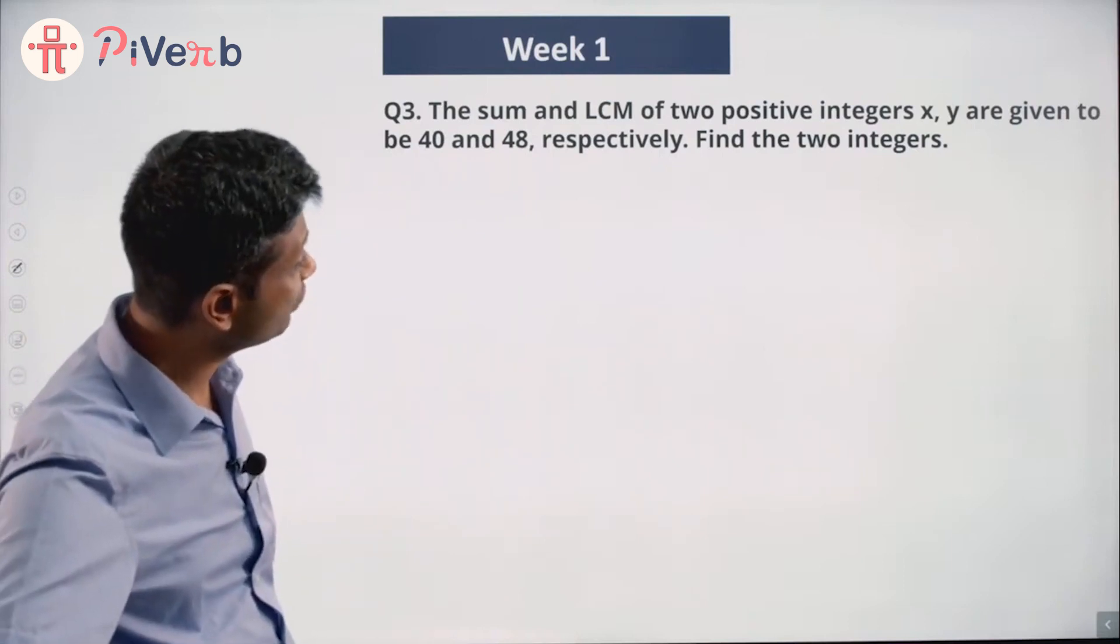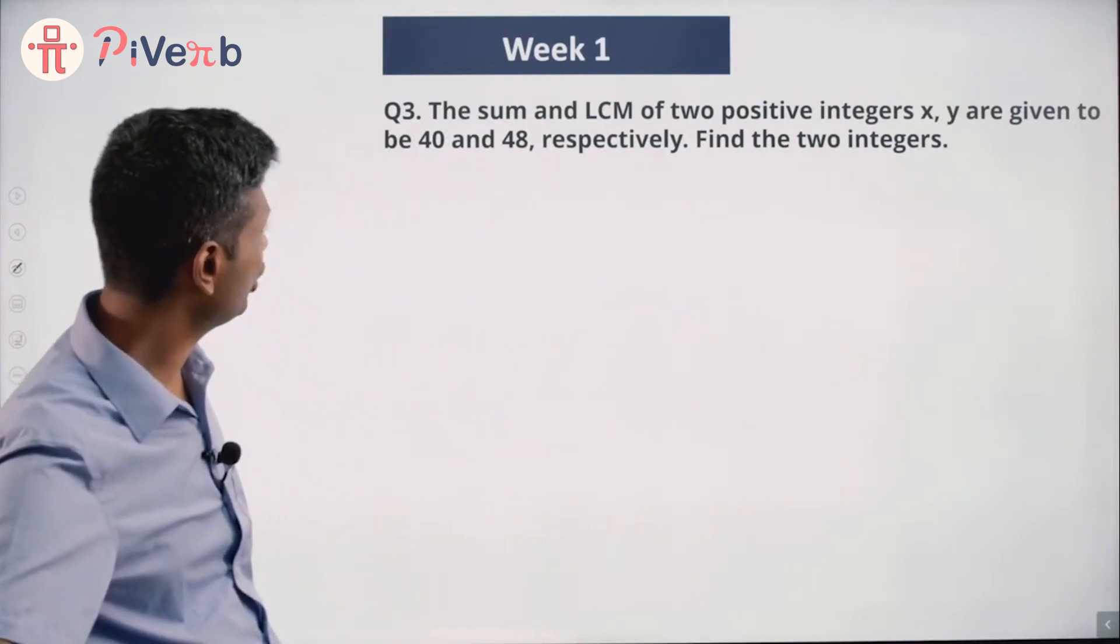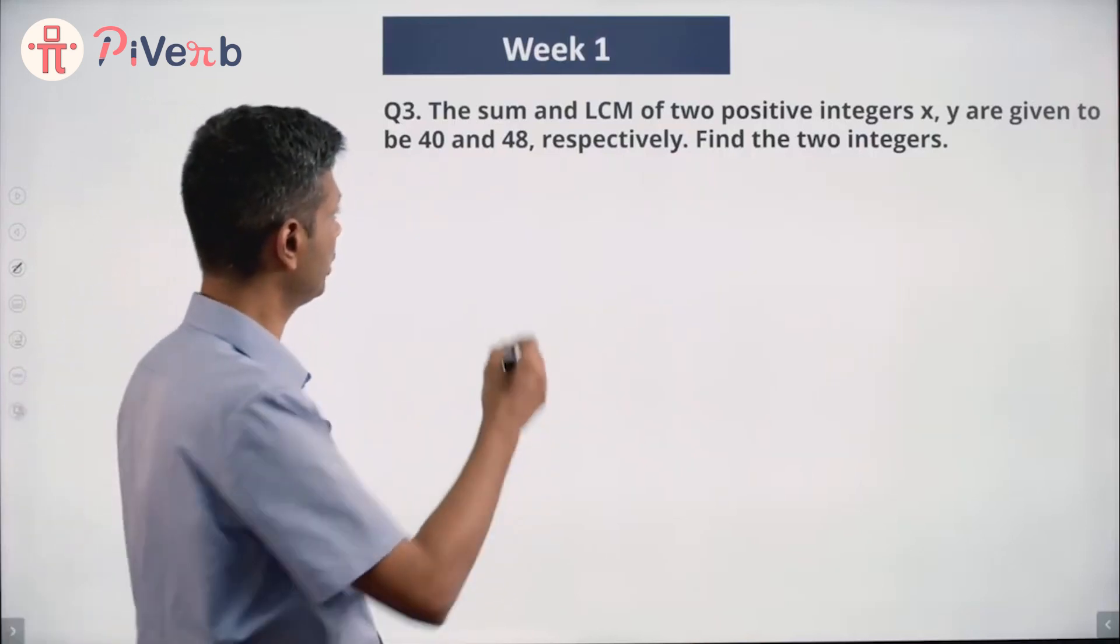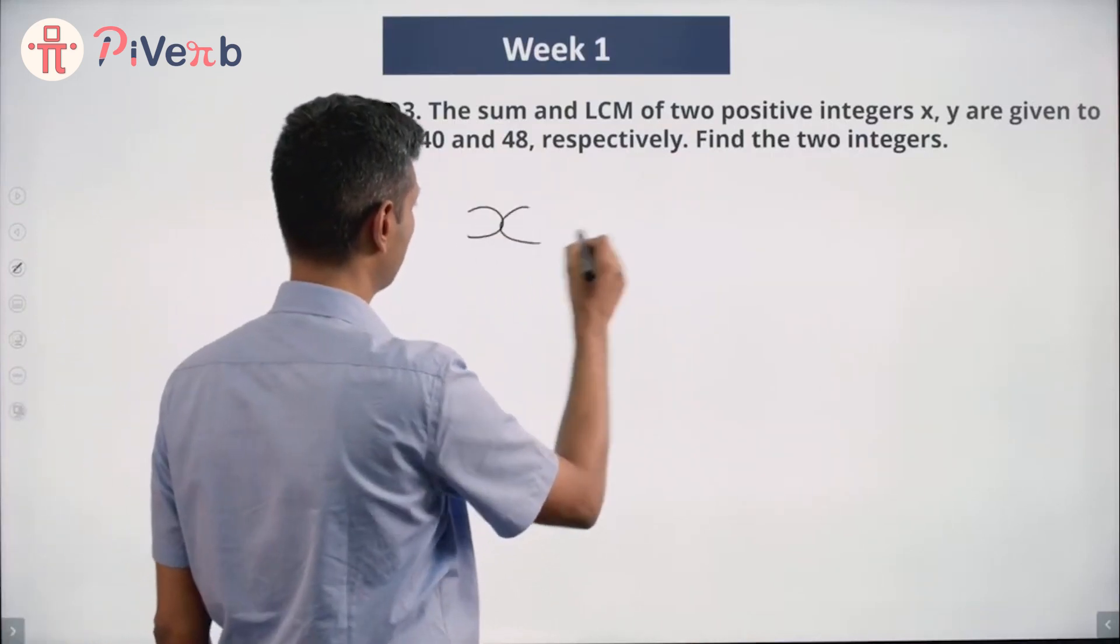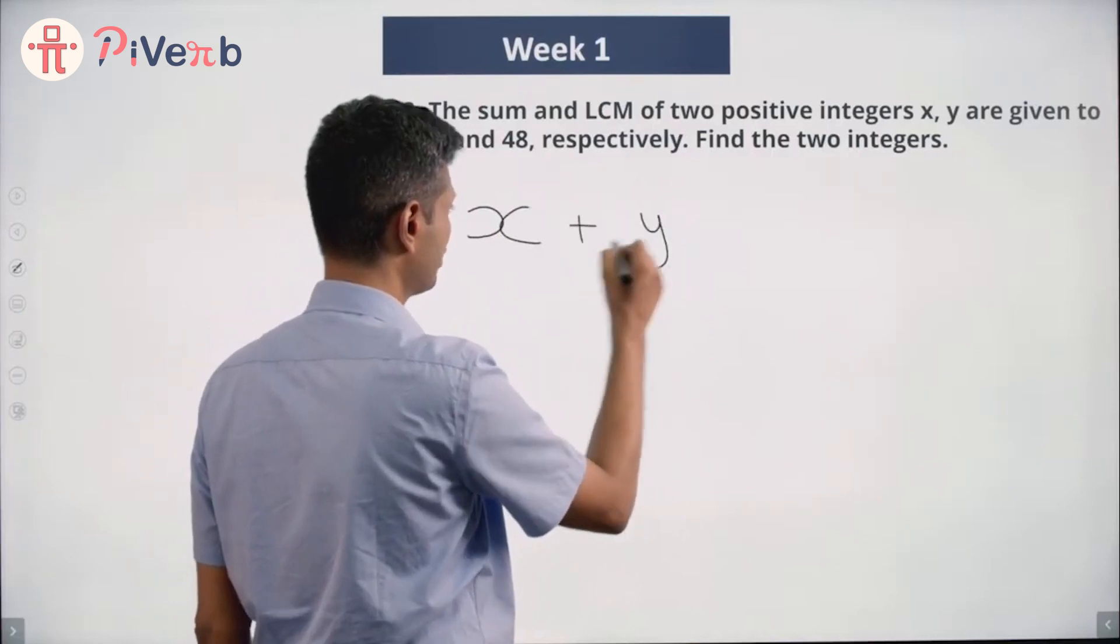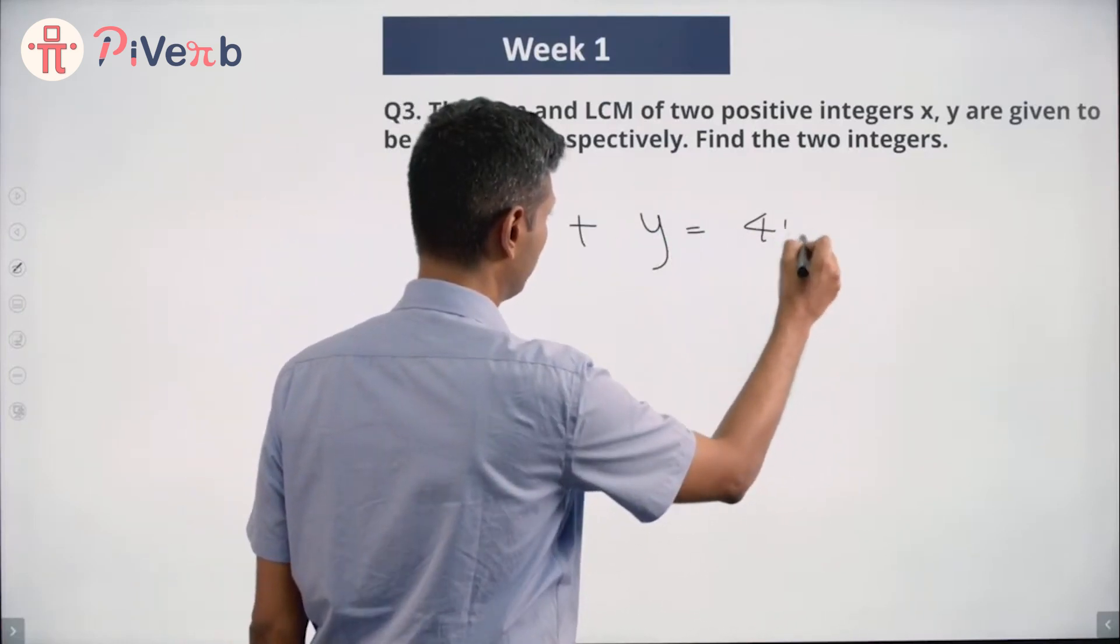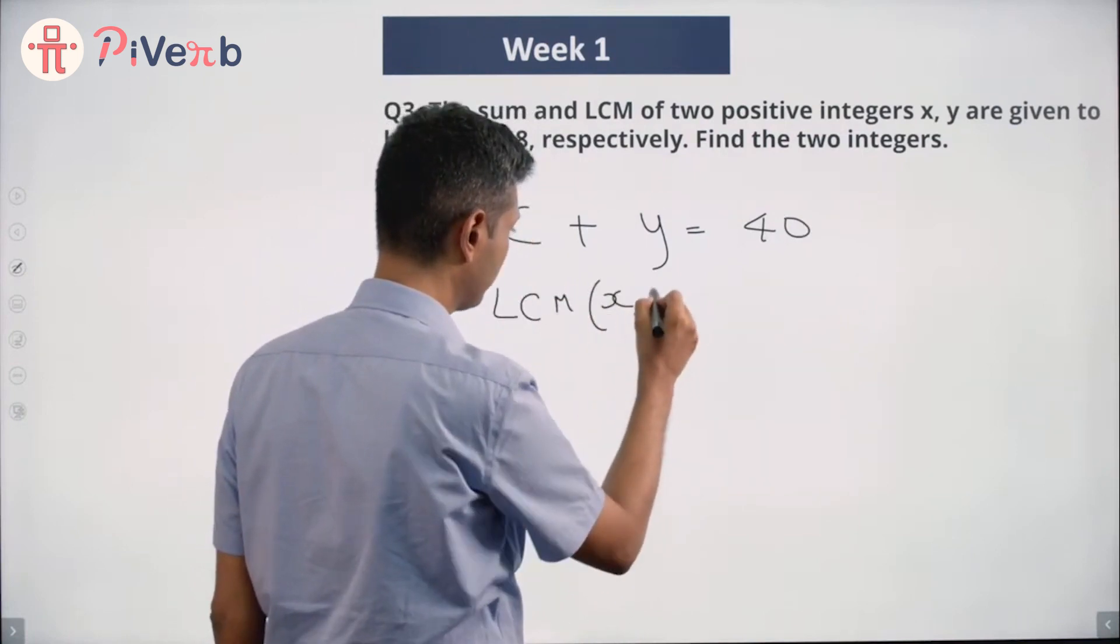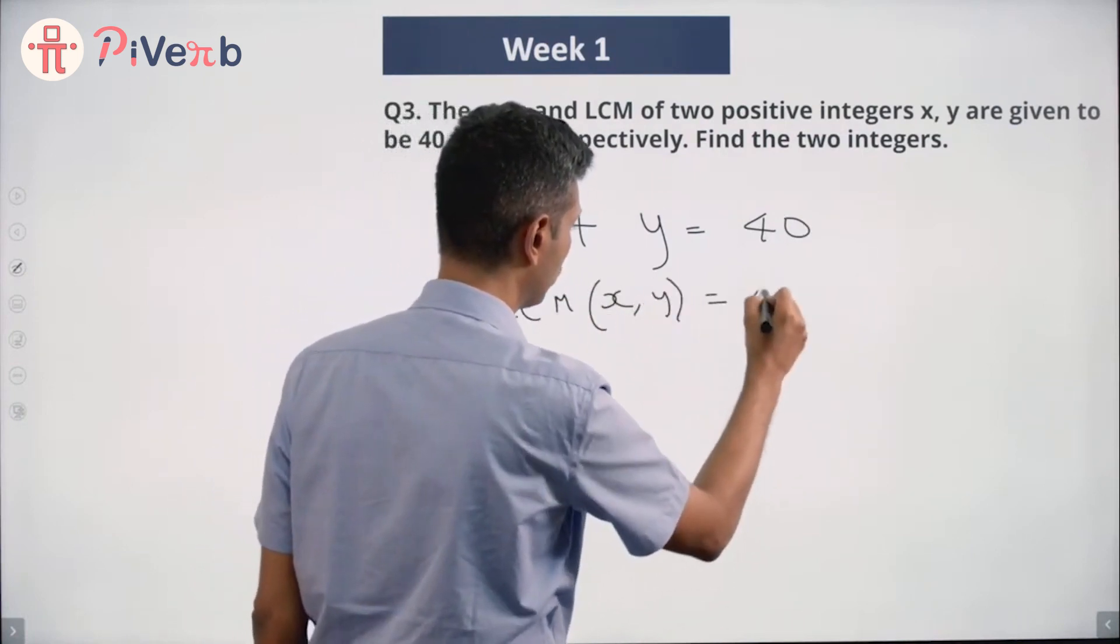The sum and LCM of two positive integers x and y are given to be 40 and 48, respectively. Find the two integers. x plus y equals 40. LCM of x and y is given to be 48.